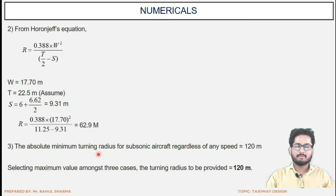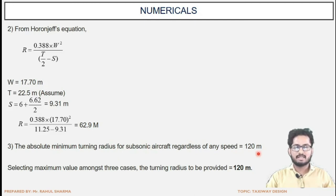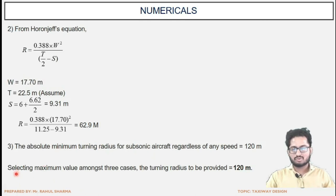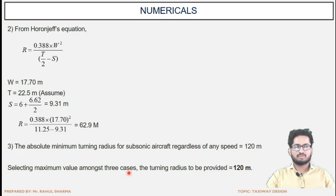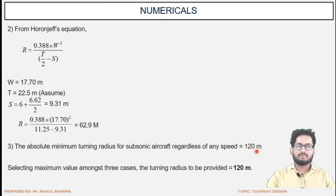The third criterion is the absolute minimum turning radius for subsonic aircraft, which is 120 m regardless of speed. So we consider the maximum value from the three cases: 98.5 m, 62.9 m, and 120 m. Selecting the maximum, the turning radius to be provided is 120 m. This is a 7-mark numerical. Note: if a supersonic aircraft is given instead, the minimum value to be taken is 180 m. This concludes taxiway design.